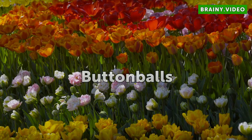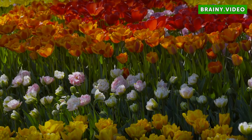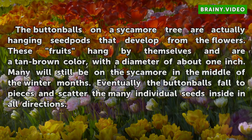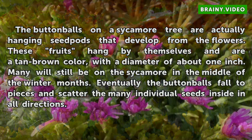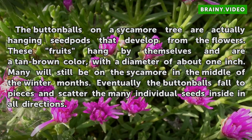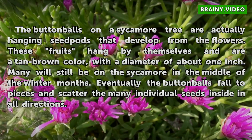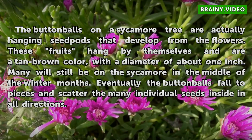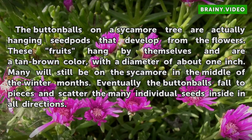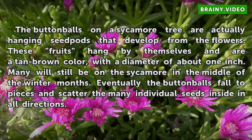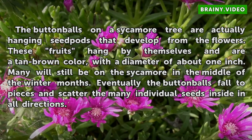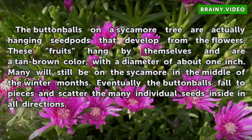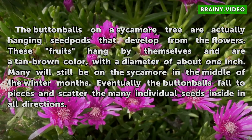Button balls. The button balls on the sycamore tree are actually hanging seed pods that develop from the flowers. These fruits hang by themselves and are a tan brown color, with a diameter of about 1 inch. Many will still be on the sycamore in the middle of the winter months. Eventually the button balls fall to pieces and scatter the many individual seeds inside in all directions.